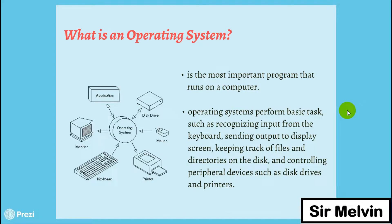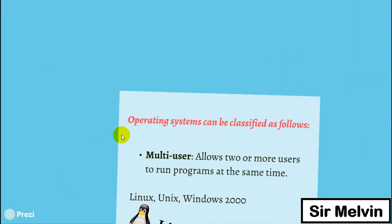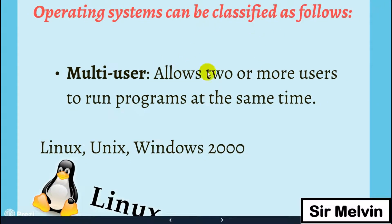Operating systems perform basic tasks such as recognizing input from the keyboard, sending output to the display screen, keeping track of files and directories on the disk, and controlling peripheral devices such as disk drives and printers. These are examples of what an operating system can do.